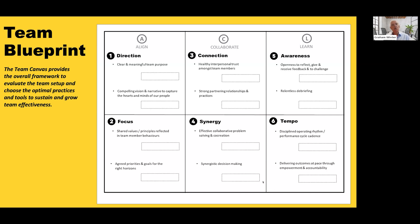I've got a session with an exec team later in the week. We'll be bringing out the canvas we did with them about nine months ago. On that canvas we have aspirations for each area, and we'll be doing an assessment against those aspirations — do we have the level of trust and collaboration, do we have the tempo we want, are we delivering the way we want, are we creating the right environment for our people? Then we go again. Like any high-performance environment, we're moving it up.